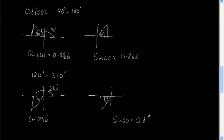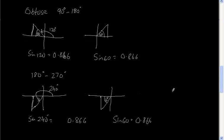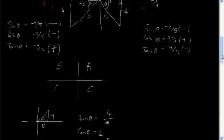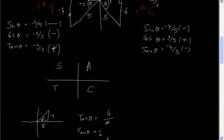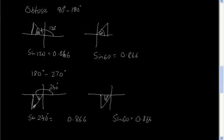Sine 60 is 0.866, and sine 240 is also 0.866 in magnitude. But because it's in the third quadrant — where only tan is positive — the opposite side of the triangle drawn there has a negative value. So the angle drawn in the third quadrant gives a negative value for sine: negative 0.866.